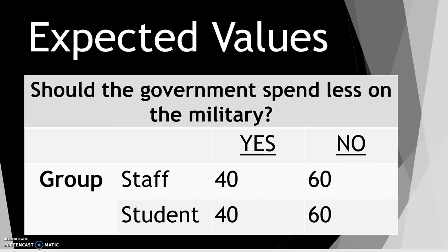The first step in finding chi-squared is to create a table that shows the counts expected without any association. Since 80 total people said yes, we would expect that to be 40 students and 40 staff members. And since 120 total people said no, we would expect that to be 60 students and 60 staff members.